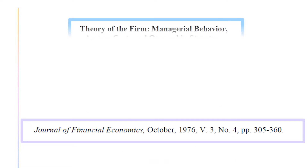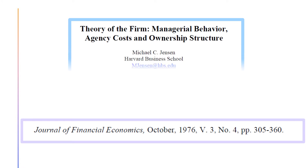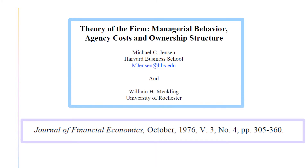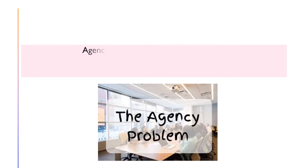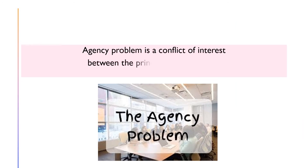Jensen and Meckling were the first to develop a comprehensive theory of the firm under agency arrangements in 1976. I would strongly encourage you to read the original paper to learn about agency theory. Agency problem is a conflict of interest between the principal and the agent. The agency problem is said to occur when managers make decisions that are not consistent with the objective of shareholder wealth maximization.